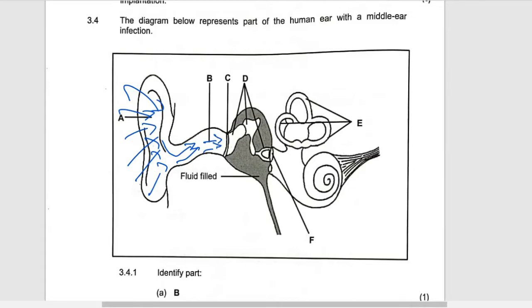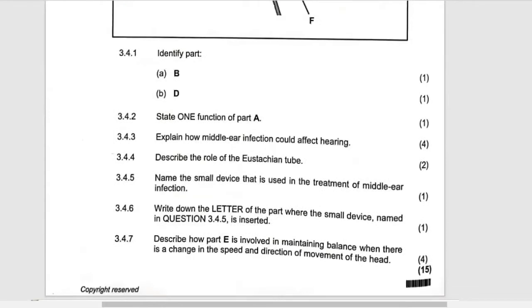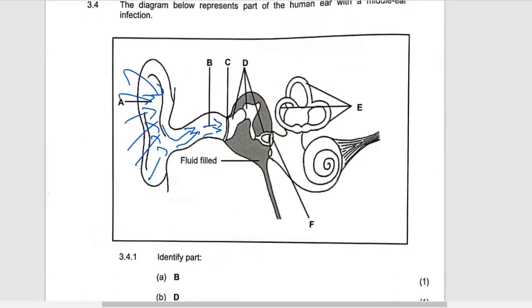Another question is explain how the middle ear infection could affect hearing. It means there will be a problem with part D, these ossicles, to move freely. The ossicles will not vibrate freely because of the fluid which is inside there.